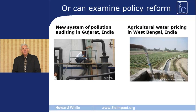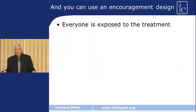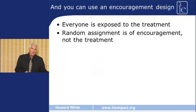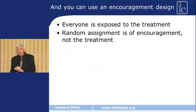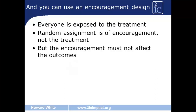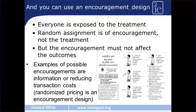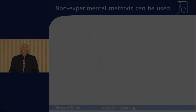We can also use what's called an encouragement design. Everyone gets exposed to the intervention — everyone has access to the infrastructure — so the random assignment is of the encouragement to use the infrastructure, not of the treatment itself. The encouragement used must not affect the outcomes we're interested in. Common encouragements are things like information on the benefits of using the infrastructure, or some incentive to do so. For example, if we randomly assigned a subsidy for the connection charge to the grid, that would be an example where we could use an encouragement design.